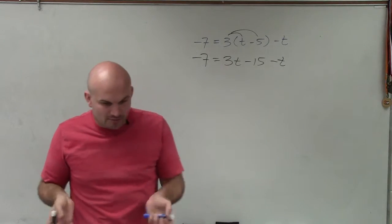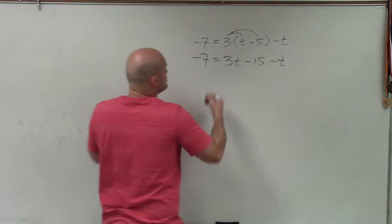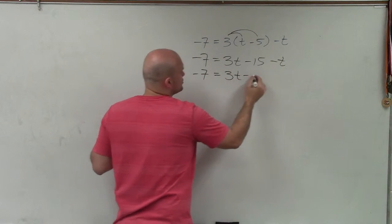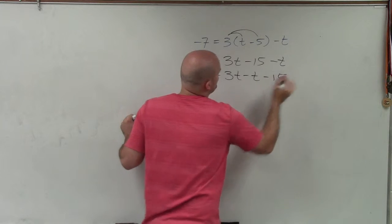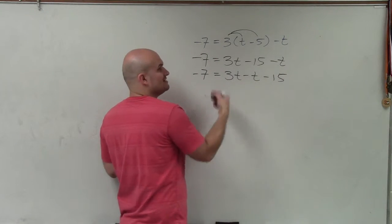So to solve for a variable, you've got to have one variable. And you can see on the right side, I have two variables. So I'm going to want to combine them. And a lot of times when I'm combining, it's very helpful just to rewrite the variables or the terms that you're combining next to each other. You can see, 3t minus t is just going to be 2t.